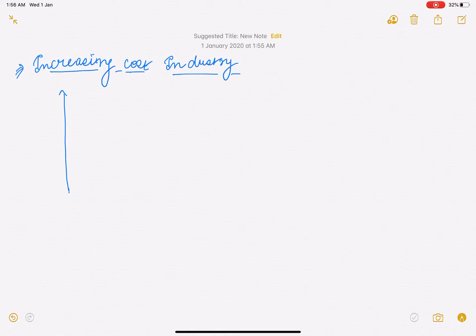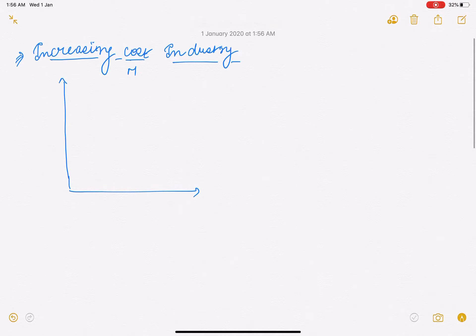So this is market demand or supply curve, and this is for firm. In this case, demand is this, supply is this.